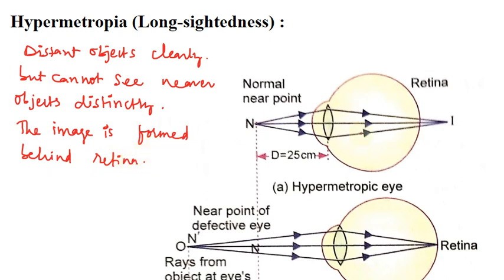In this ray diagram we can see the object is at 25 centimeters, that is the normal near point, and the image is formed behind the retina. The cause of hypermetropia is that the eyeball is too small and the focal length of the eye lens is elongated, or the power of the eye lens is too small.